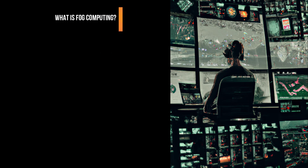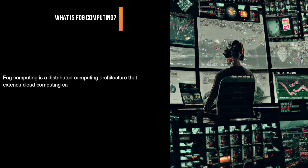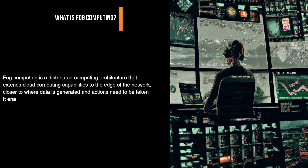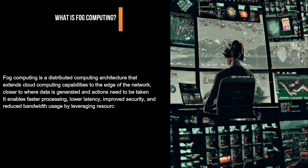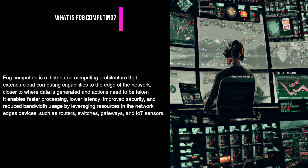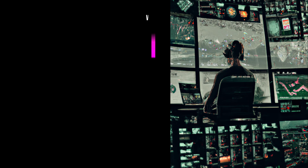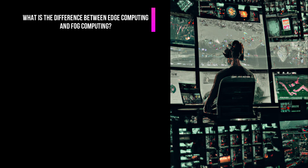What is fog computing? Fog computing is a distributed computing architecture that extends cloud computing capabilities to the edge of the network, closer to where data is generated and actions need to be taken. It enables faster processing, lower latency, improved security, and reduced bandwidth usage by leveraging resources in network edge devices such as routers, switches, gateways, and IoT sensors.